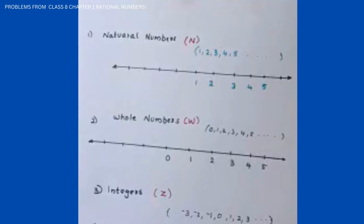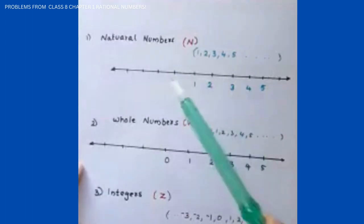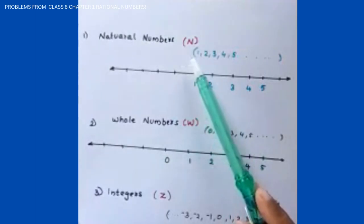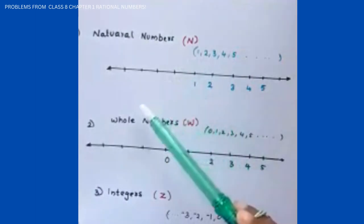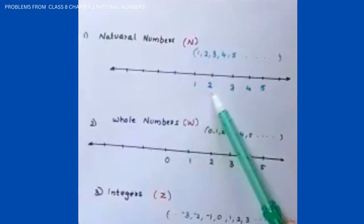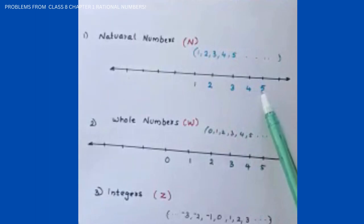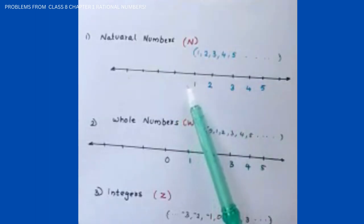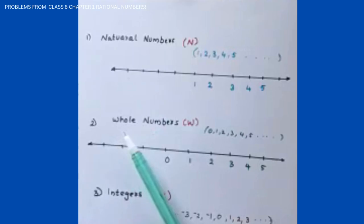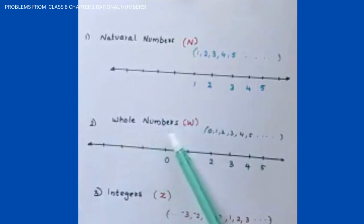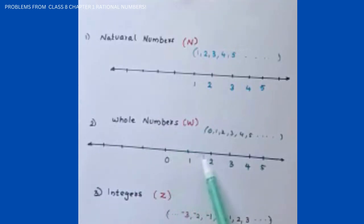The concept of numbers can be better understood using a number line. Natural numbers are denoted by N, and include numbers 1, 2, 3, 4, 5, etcetera — 0 is not included. Whole numbers are denoted by W, and include 0, 1, 2, 3, 4, 5, etcetera.